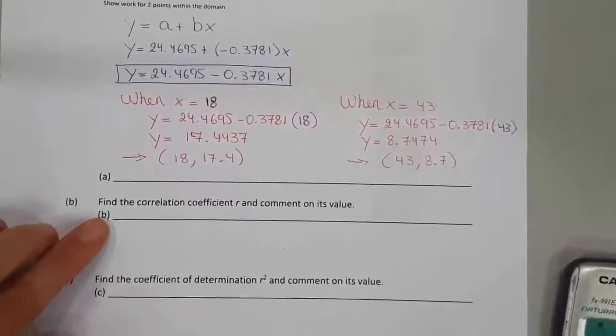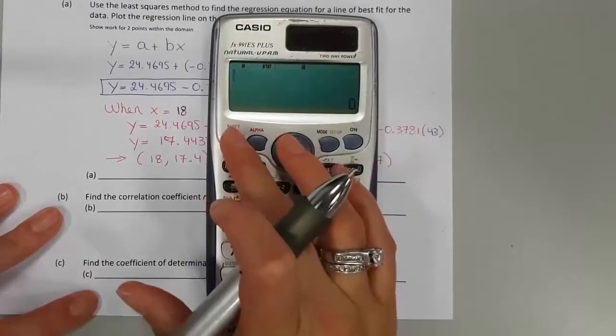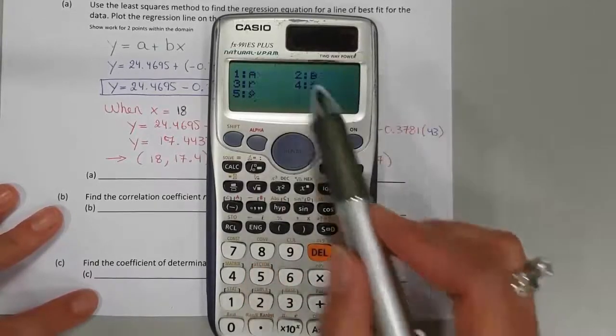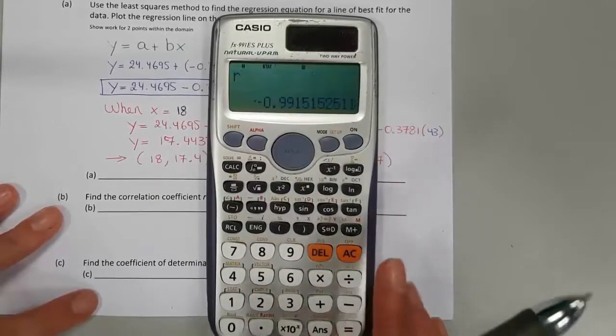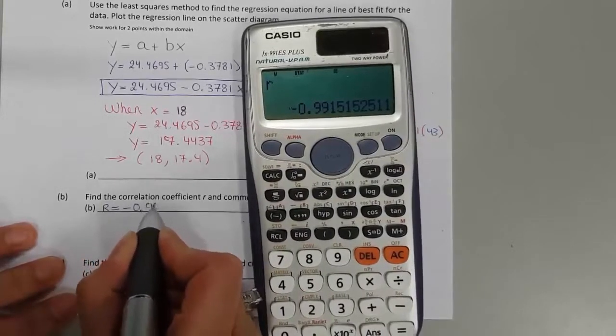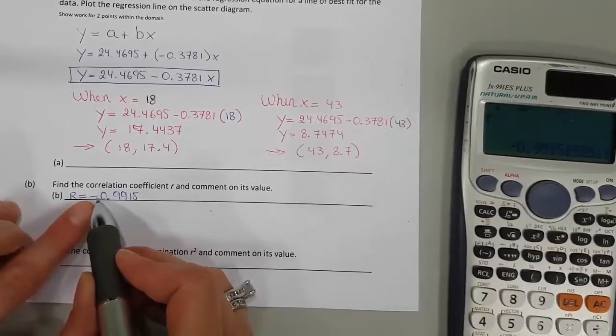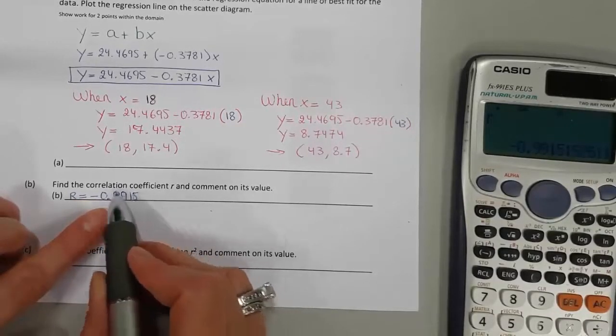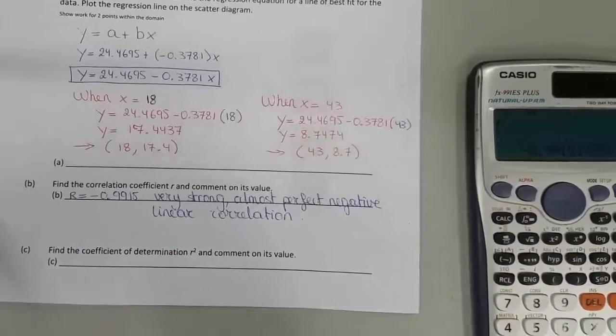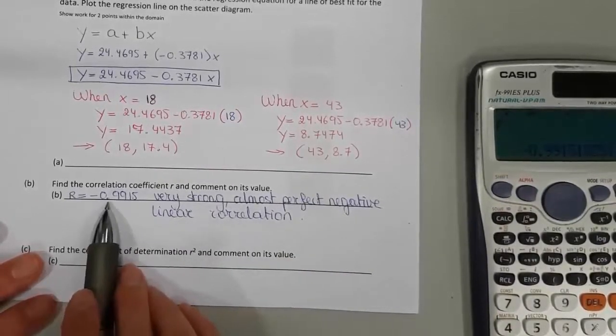The next question asks us to find the correlation coefficient r and comment on its value. So in your calculator, go to statistics, shift 1 or shift statistics. Find regression, it's either 5 or 7, and then r, the correlation coefficient. It tells us r equals negative 0.9915. The negative sign means that it's a negative linear correlation. And it's very close to 1. So it's an almost perfect negative linear correlation.